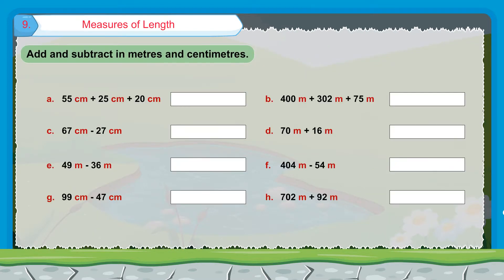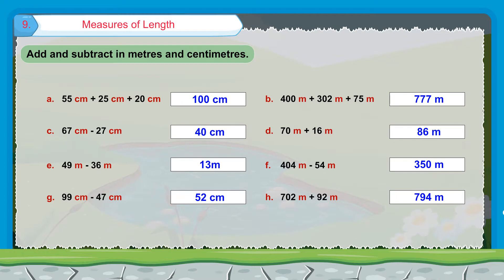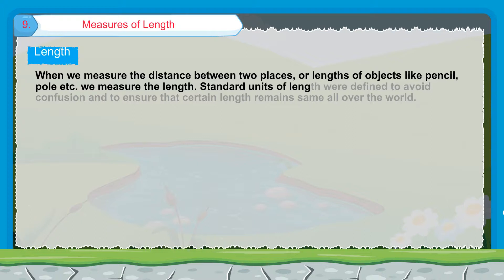We add and subtract in meters and centimeters. When we measure the distance between two places or lengths of objects like pencil, pole, etc., we measure the length. Standard units of length were defined to avoid confusion and to ensure that a certain length remains the same all over the world.